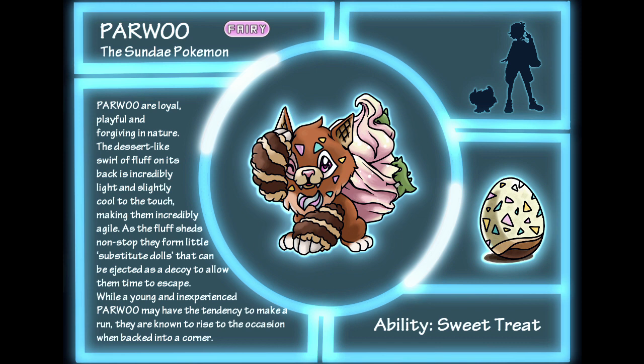Pawu is the Sundae Pokemon. Pawu are loyal, playful, and forgiving in nature. The dessert-like swirl of fluff on its back is incredibly light and slightly cool to the touch, making them incredibly agile. As the fluff sheds non-stop, they form little substitute dolls that can be ejected as a decoy to allow them time to escape. While a young and inexperienced Pawu may have the tendency to make a run, they are known to rise to the occasion when backed into a corner.